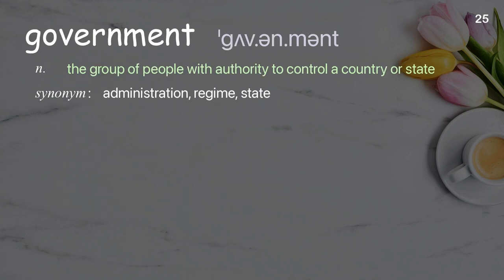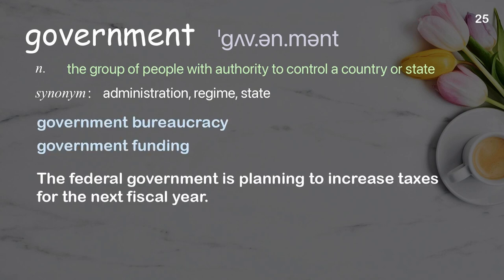Government: the group of people with authority to control a country or state. Examples: government bureaucracy, government funding. The federal government is planning to increase taxes for the next fiscal year.